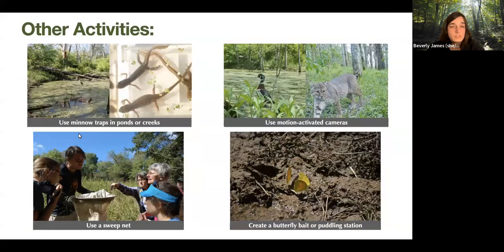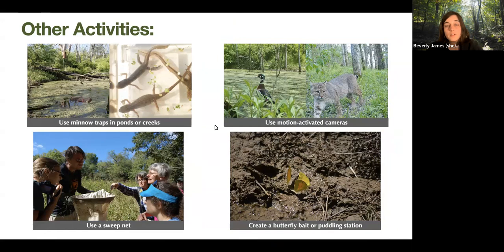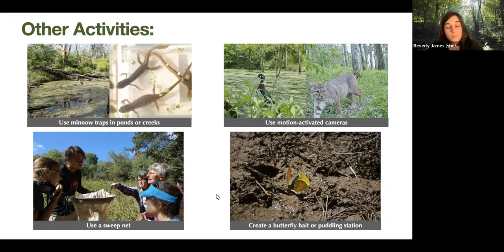At Floracliff we use minnow traps in ponds to document frogs and salamanders, and sweep nets across fields to find different insects. Motion-activated cameras work too — it doesn't have to be a trail camera; many people have motion-activated cameras on their house, so if a raccoon, possum, or bird shows up, you can put those pictures on iNaturalist. You can also create a butterfly bait or puddling station — some people use rotting fruit and beer to attract butterflies.